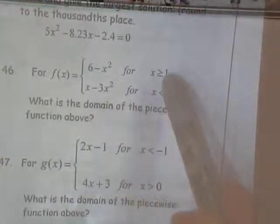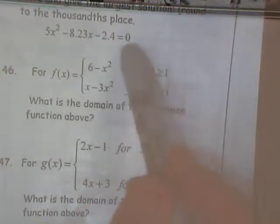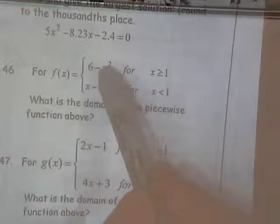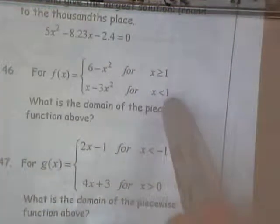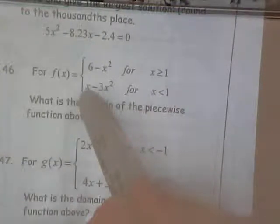The question is, when do we use the top one or when do we use the bottom one? If your x value that you're plugging in is greater than or equal to one, you would plug it into the top equation. If your x value is less than one, you would plug it into the bottom equation. That's how this works.